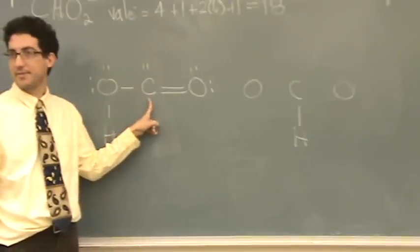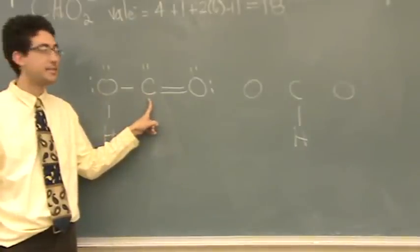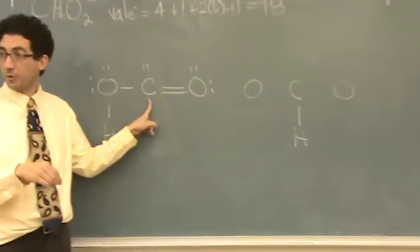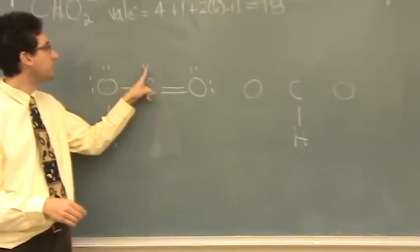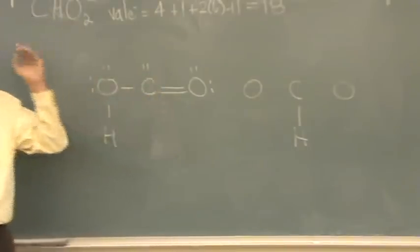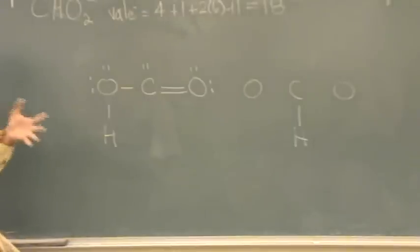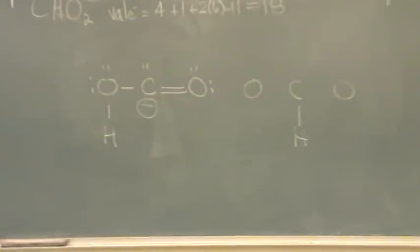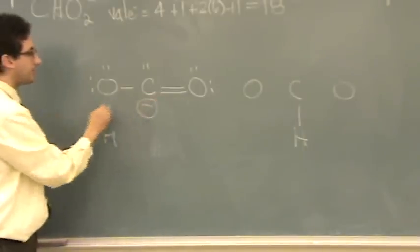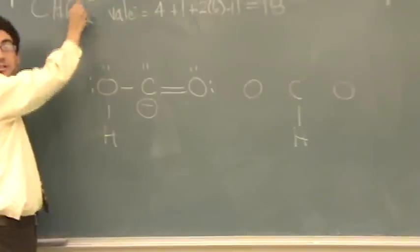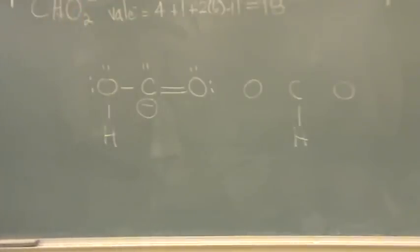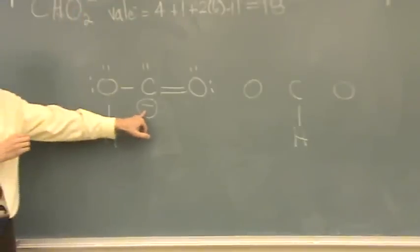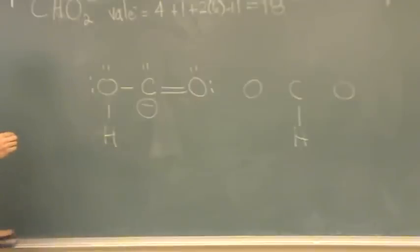Now for carbon: it's in column four. There's one, two, three, four, five — five things touching it. There's one extra electronic connection beyond what column four expects, so that gives a negative charge. Notice that the sum of the formal charges equals the overall charge — that's always going to be true. The sum of the formal charges is negative one, and the overall charge is negative one.